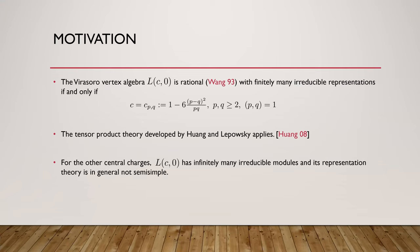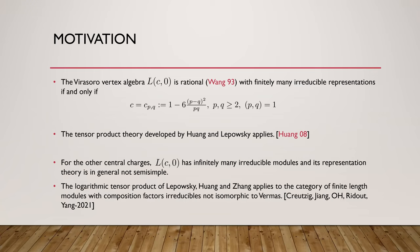For other central charges, the Virasoro vertex algebra is in general irrational. It has infinitely many irreducible modules and in general has non-semisimple representation theory. Only recently, we were able to prove with collaborators that the logarithmic tensor product theory — a generalization of this tensor product theory to the logarithmic situation, in which you have either infinitely many irreducibles or non-simple representation theory — applies to all central charges.